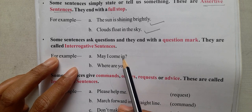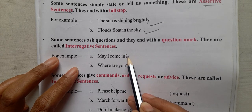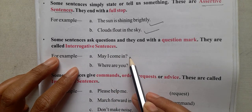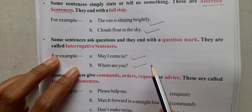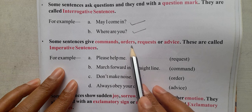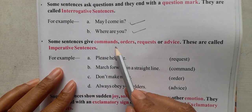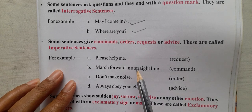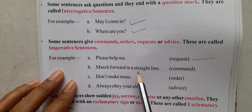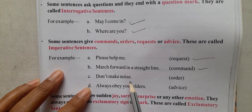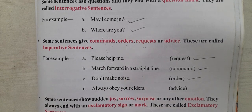Some sentences ask questions and end with a question mark — these are called interrogative sentences. Some sentences give commands, orders, requests, or advice — these are called imperative sentences. For example: 'Please help me' is a request. 'March forward in a straight line' is a command. 'Don't make noise' and 'Always obey your elders' are advice. These are imperative sentences.